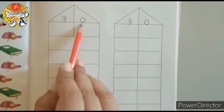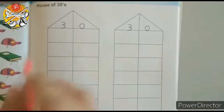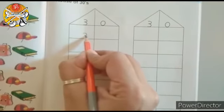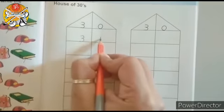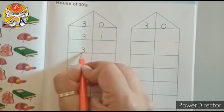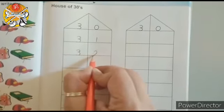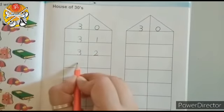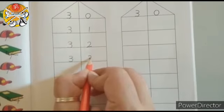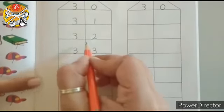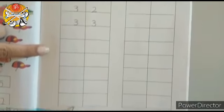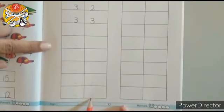3, 0, 30. So, this is house of 30. Now, let's trace. 3, 1, 31. 3, 2, 32. 3, 3, 33. Like this, you all have to trace these numerals till 3, 9, 39.